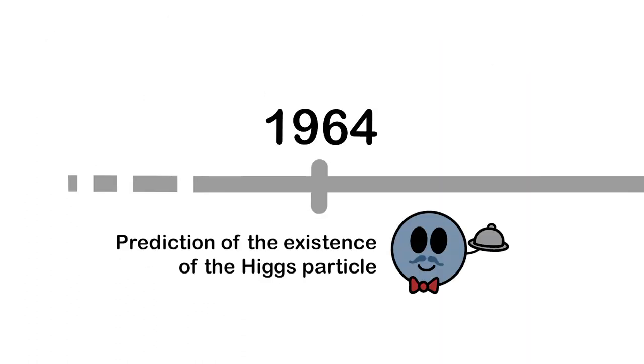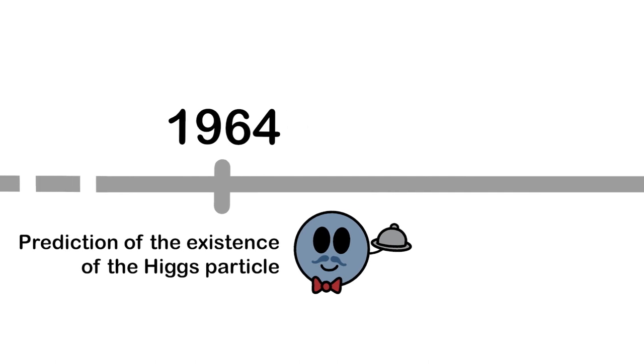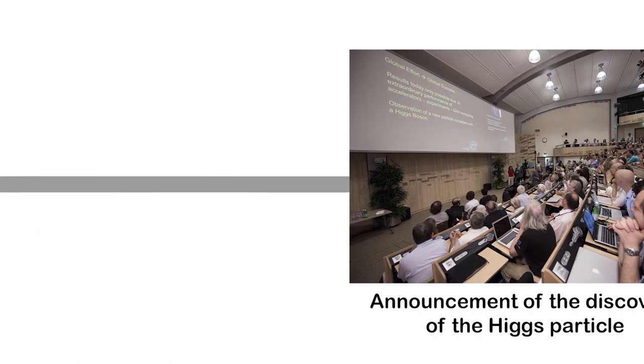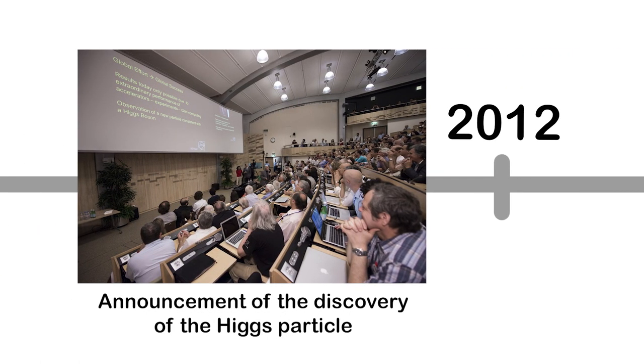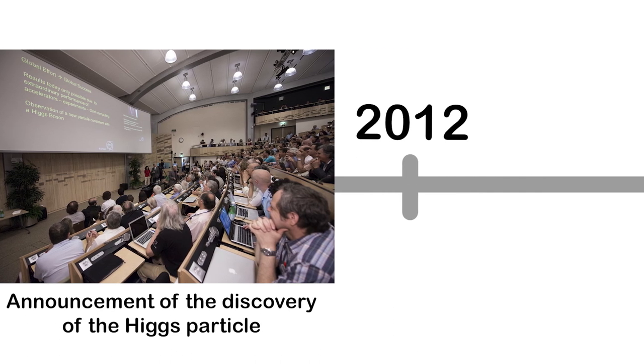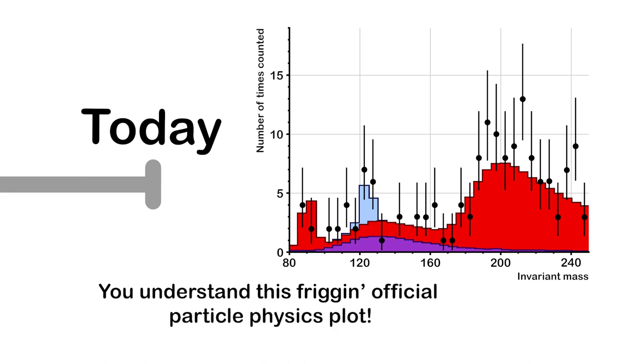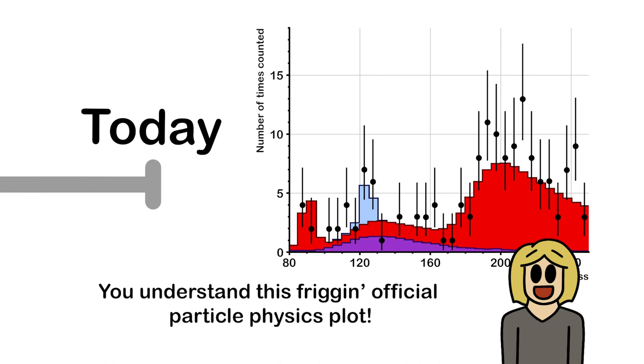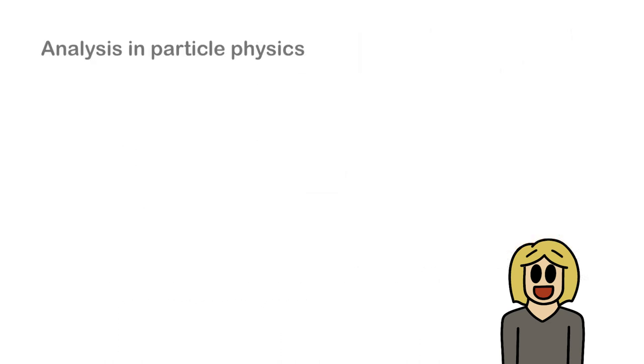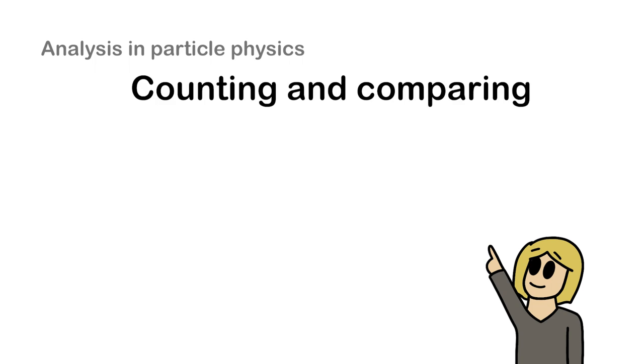Almost 60 years ago, in 1964, a prediction was made that this particle, the Higgs particle, should exist. Then 50 years later, the first evidence for its existence was presented. And today, today you learned to understand this official particle physics plot. That is no small feat. And you now also know that particle physics analysis is, to a certain degree, just counting results and comparing them to expectations.